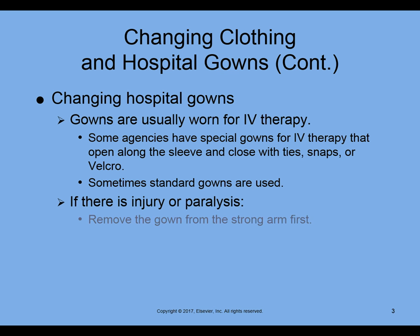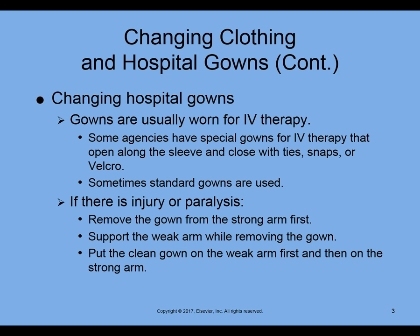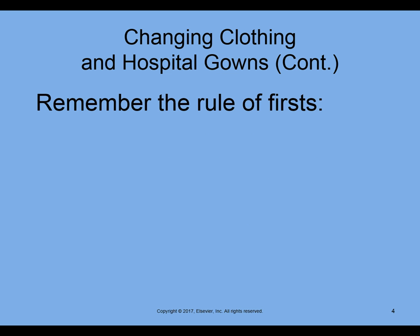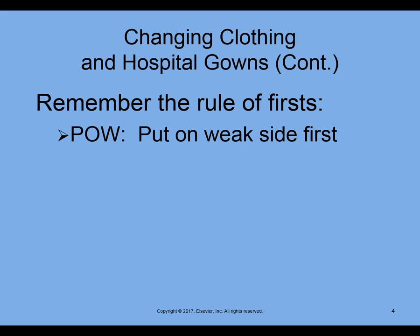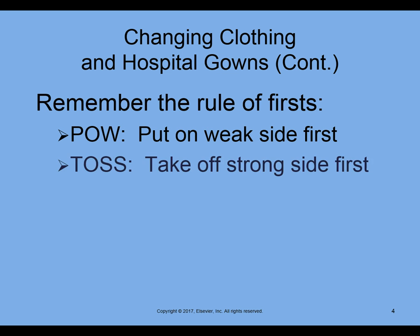If there is injury or paralysis, remove the gown from the strong arm first and support the weak arm while removing the gown, because you're going to remove the gown and take it off the weak side first. As a reminder of the rules of firsts: an easy way to remember it is POW — put on the weak side first, and take off the strong side first.